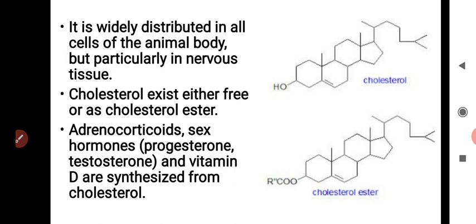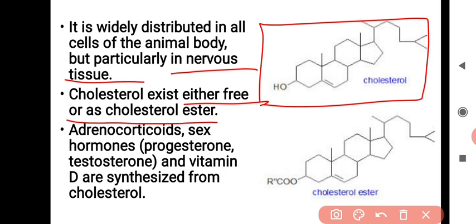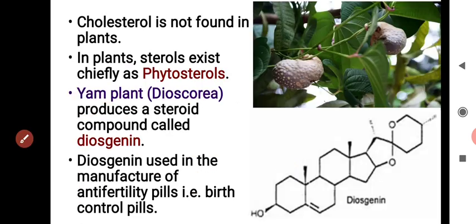Cholesterol is widely distributed in all cells of the animal body, but the maximum amount is stored particularly in nervous tissue. Cholesterol exists either in free form or as cholesterol esters. Adrenal corticoids, sex hormones such as progesterone and testosterone, and vitamin D are all synthesized from cholesterol. Cholesterol is not found in plants; in plants, steroids exist chiefly as phytosterols.